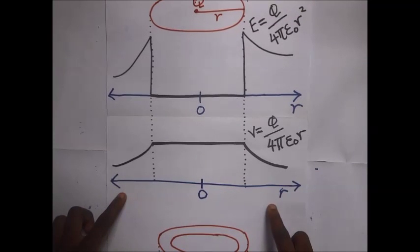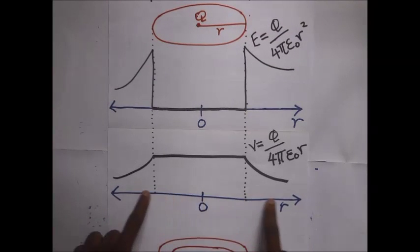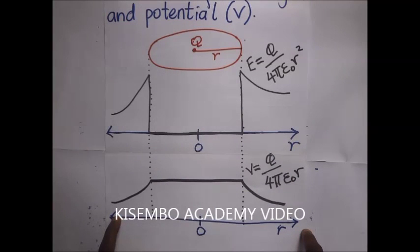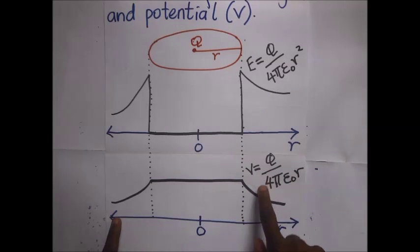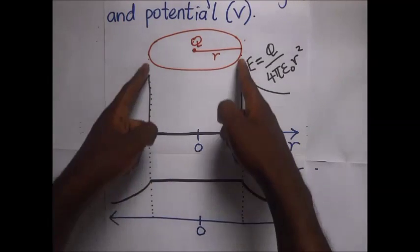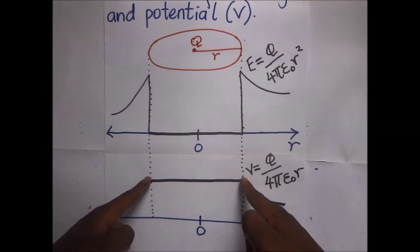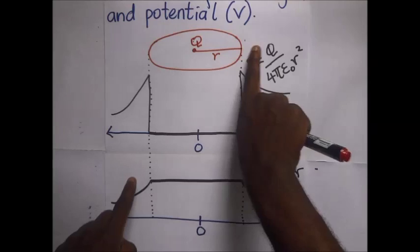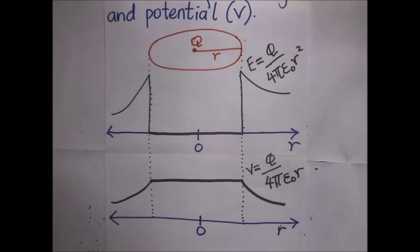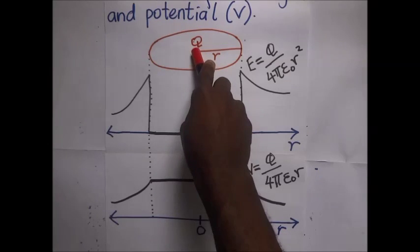Down here is the variation of the distance r from the center of the conductor and the potential. The potential within the conductor is constant. But as you start moving outside the conductor, the potential is inversely proportional to the distance from the center of the conductor.